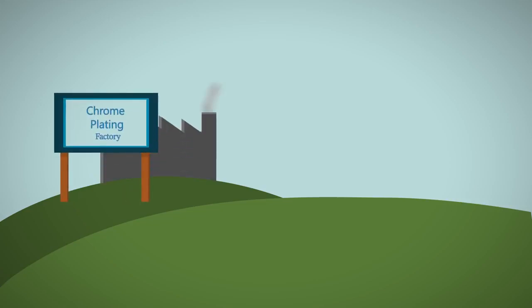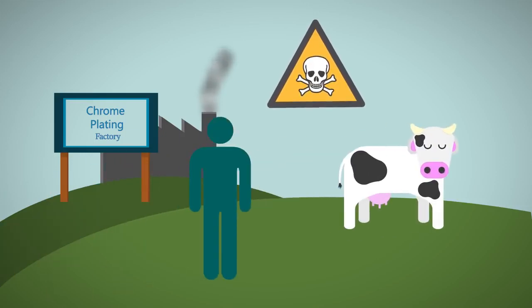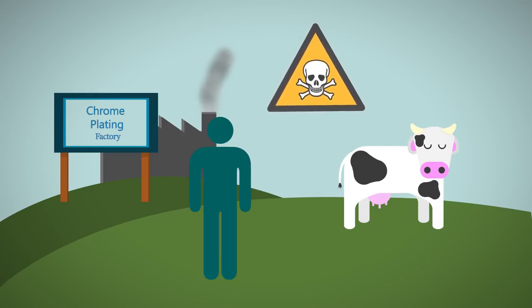There are also environmental concerns associated with some metals. Chrome plating, for example, creates waste materials which are dangerous to humans and animals. Waste products have to be treated accordingly to make sure they are safe, which can be very expensive.